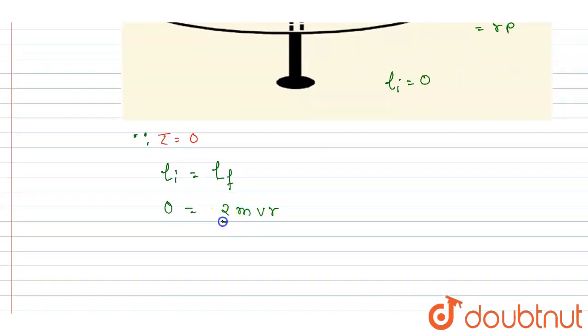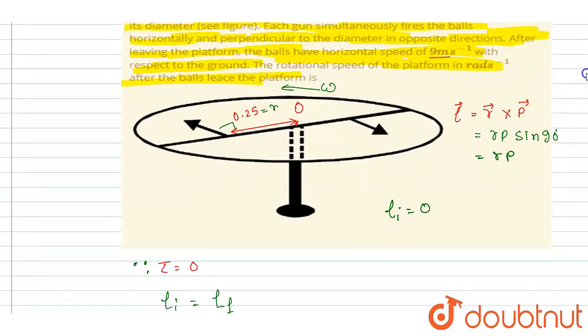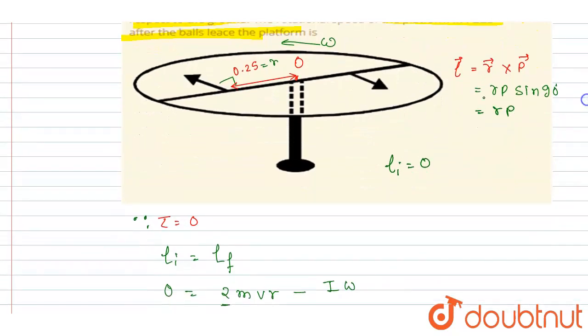So I will write here 2 mvr (because two balls are there) minus I times omega. From here I can write down I - you can calculate this is a disc, right? And this disc is having a mass of 2 kg, so I is MR²/2.